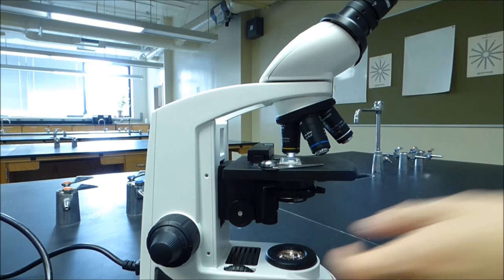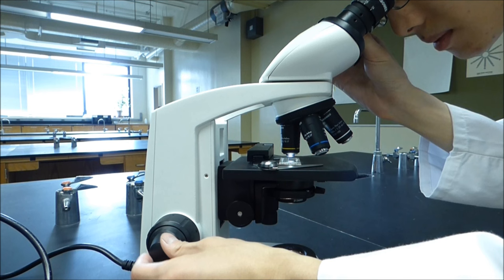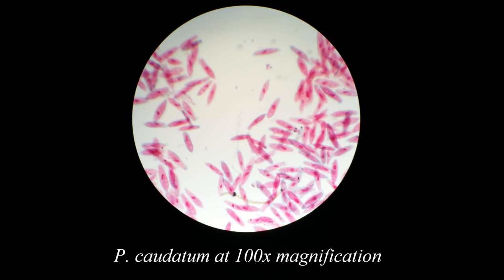Now look through your ocular lens. Most microscopes have parfocal objectives. Consequently, if the image was in focus with the 4x objective, it should be nearly in focus when you change to the 10x objective. Therefore, you only need a minor adjustment with the fine adjustment knob to bring the specimen into sharp focus.